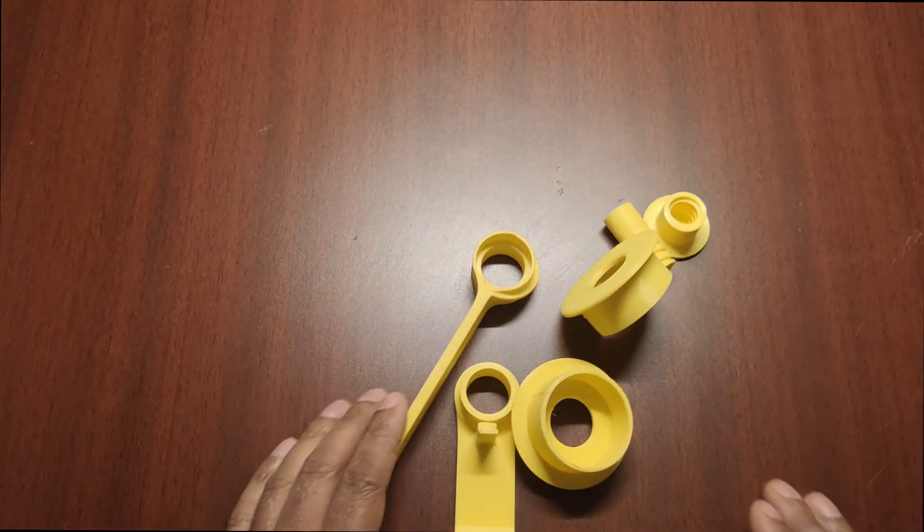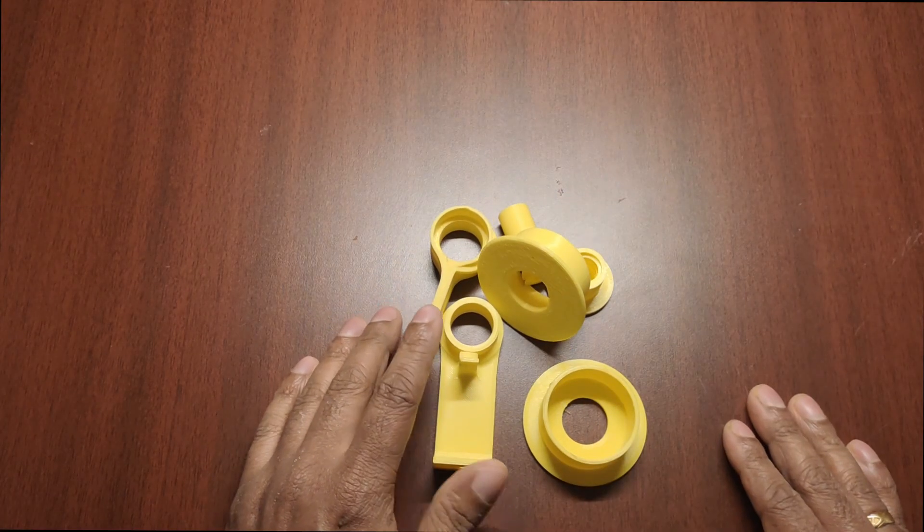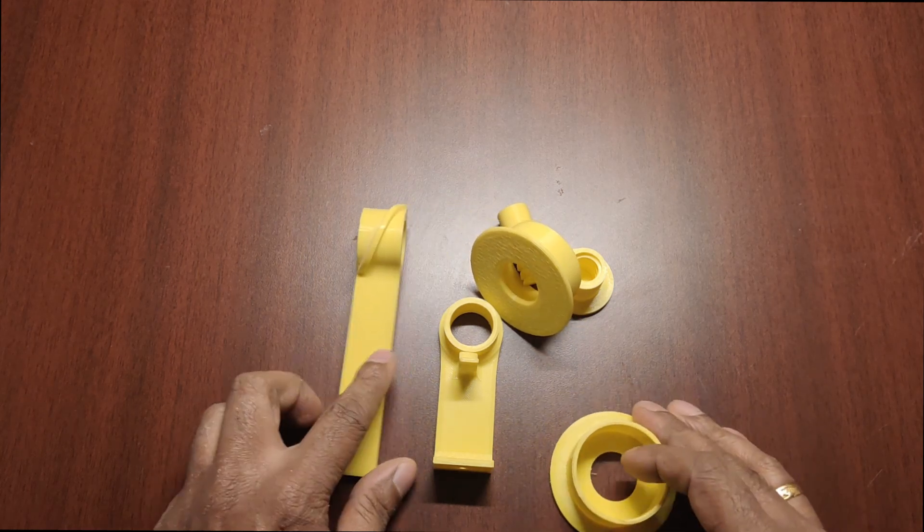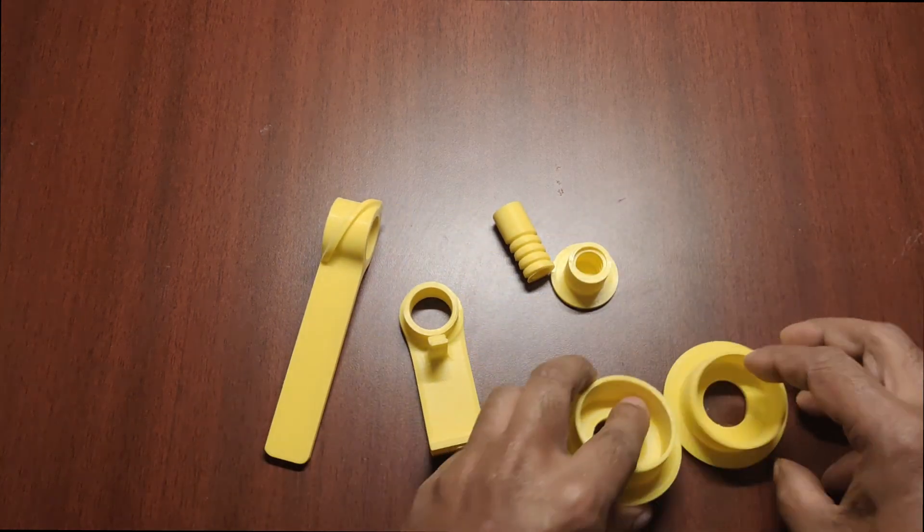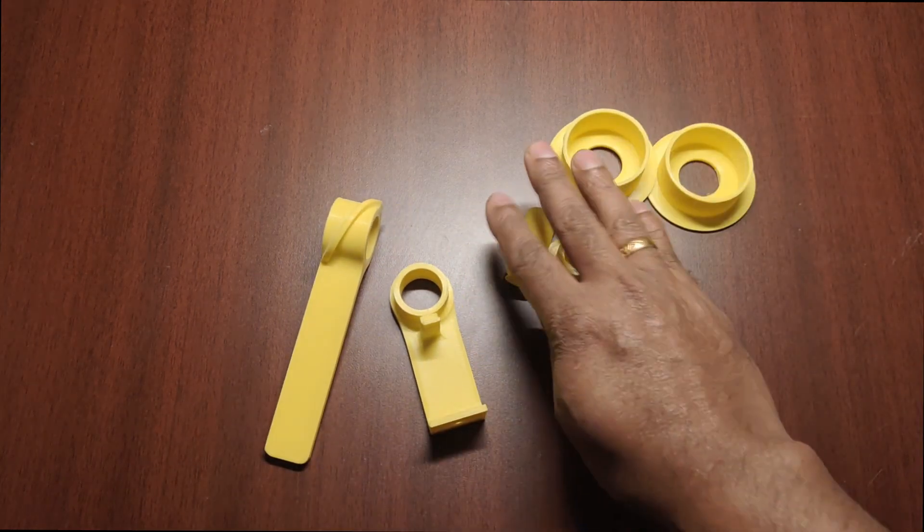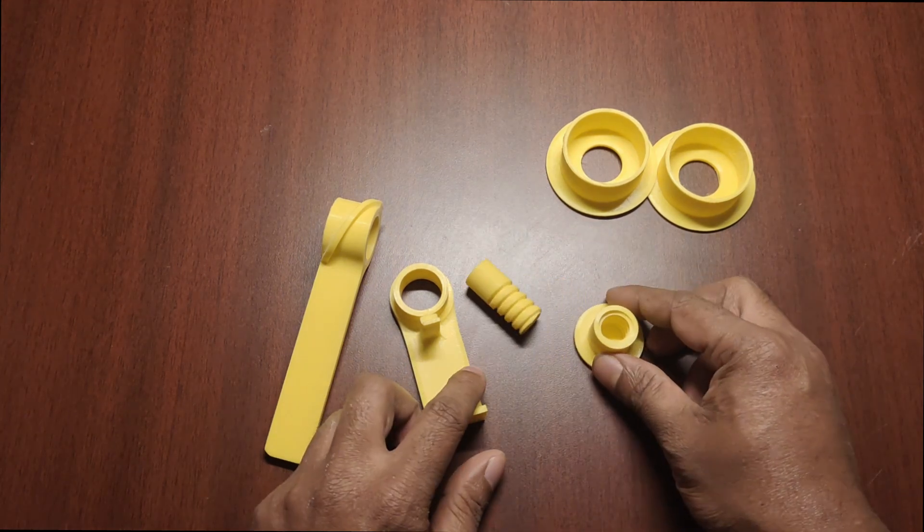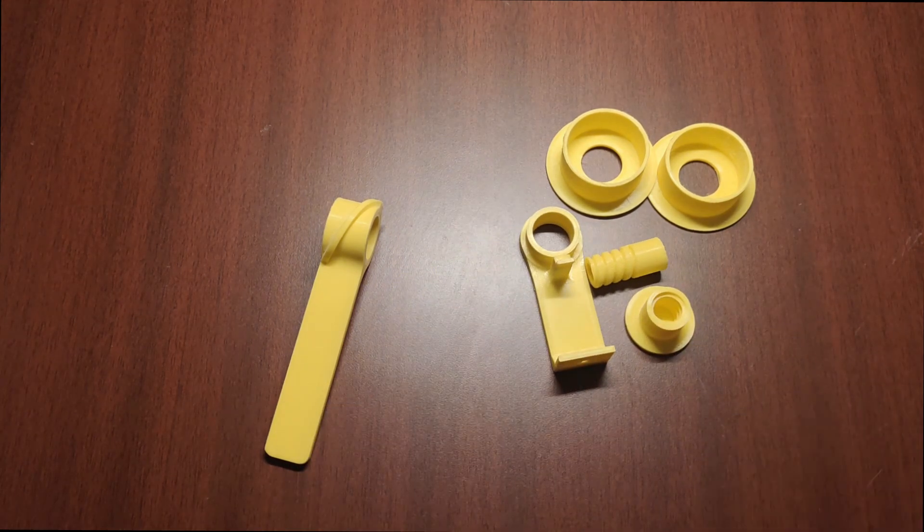Hi friends, today we will see the design and production of a minimalistic kitchen tissue paper dispenser with a friction stopper for a neat and organized kitchen. The design and STL files for printing are totally free and available in the description.